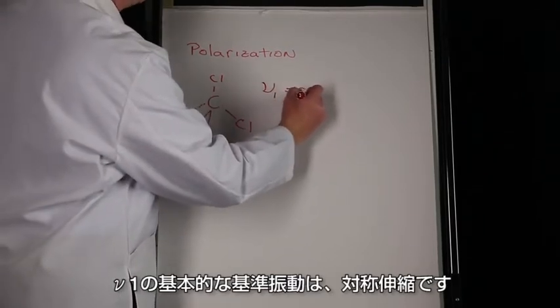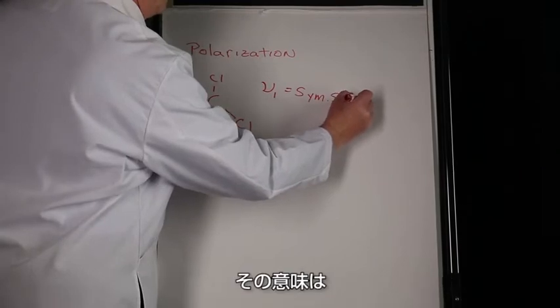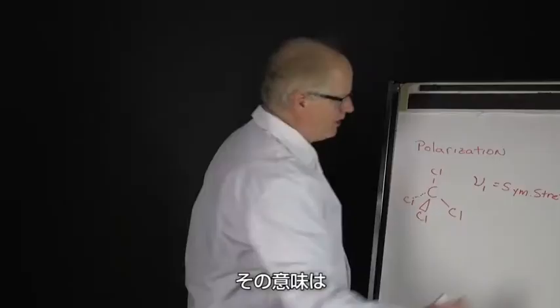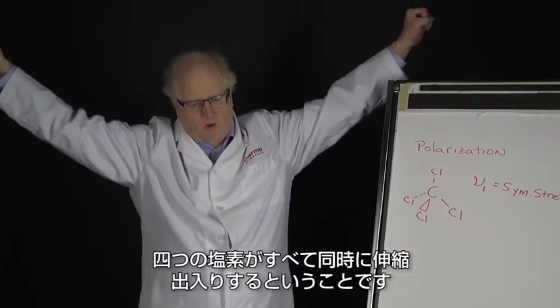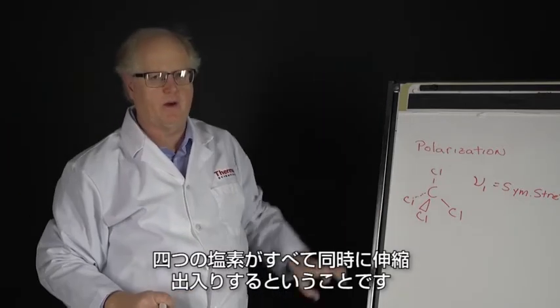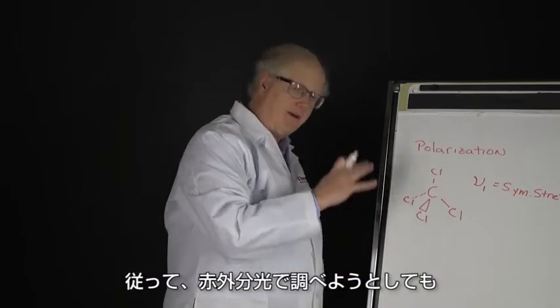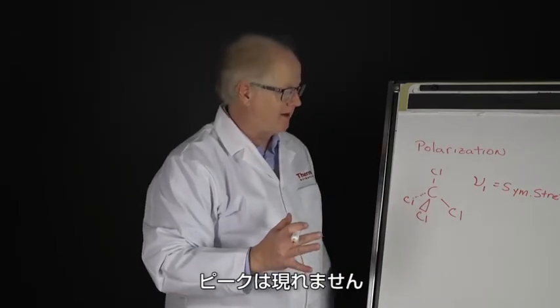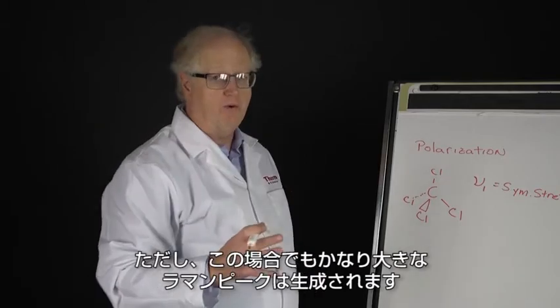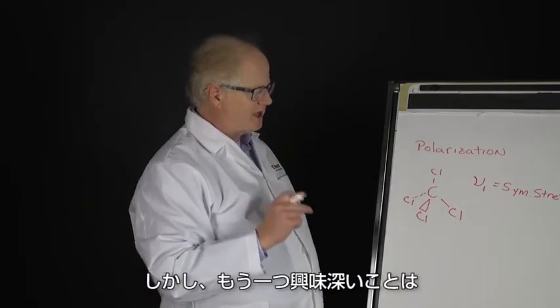ν1 is a symmetric stretch. What that means is all four of the chlorines are stretching simultaneously, going in and out. That doesn't change the dipole, so if you were to look in the infrared spectrum, you would not see a peak there. But it does generate a sizable Raman peak. The other interesting thing is...